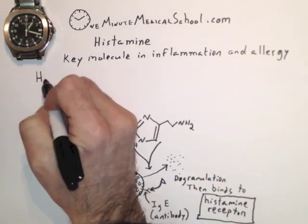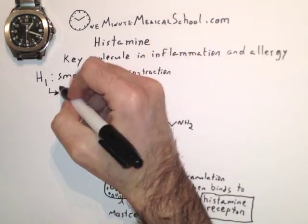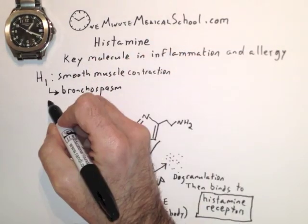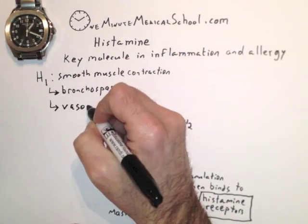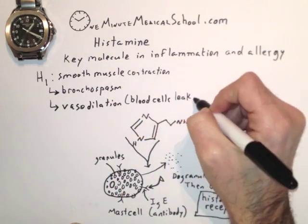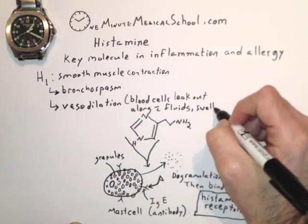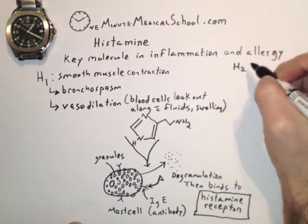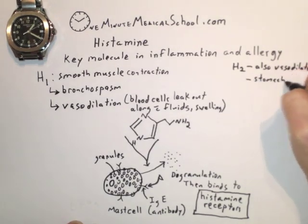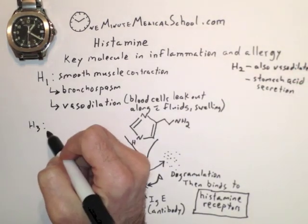H1 receptors are responsible for bronchospasm, which makes you wheeze, and vasodilation, which increases blood flow. H2 receptors also mediate vasodilation and they cause increased stomach acid secretion.